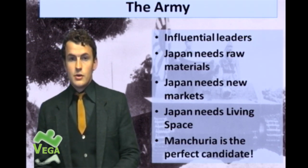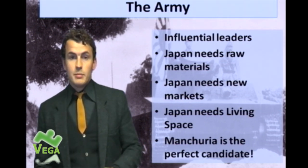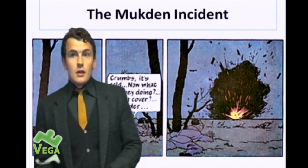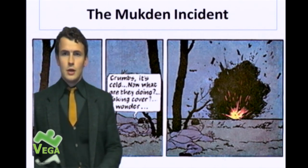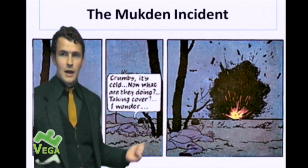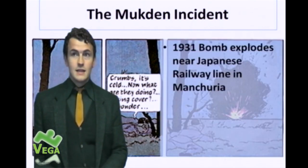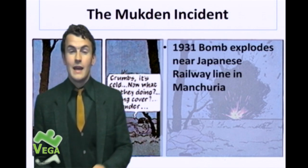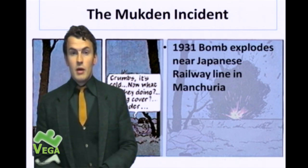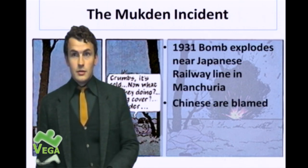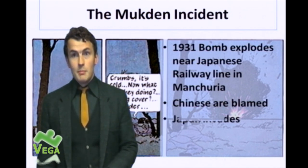Since the early part of the 20th century, Japan had owned — or at least controlled — a railway line running through that particular area. Now, there was something called the Mukden Incident. If you're a Tintin fan, you can look at a book called Tintin and the Blue Lotus — Tintin is here in the background, witnessing firsthand this Mukden Incident. In 1931, a bomb exploded near that Japanese railway line in Manchuria. It is suspected that the Japanese set that bomb off themselves, but the Japanese blamed the Chinese. As a result, they decided to invade Manchuria.